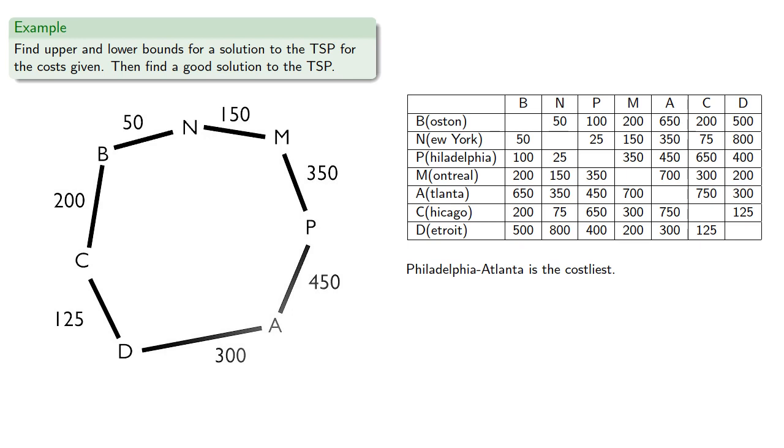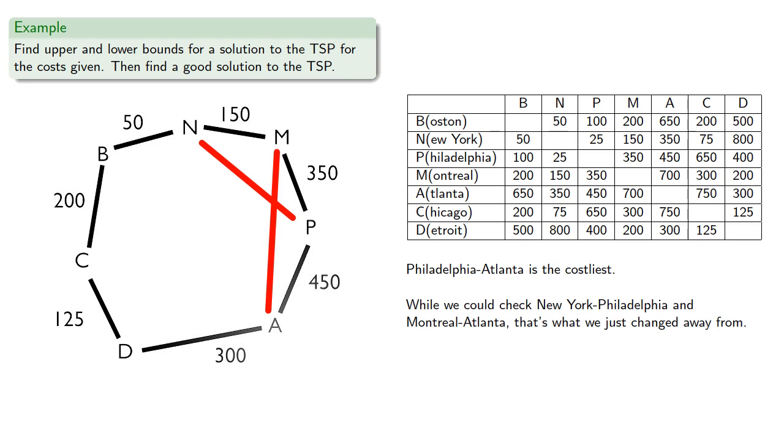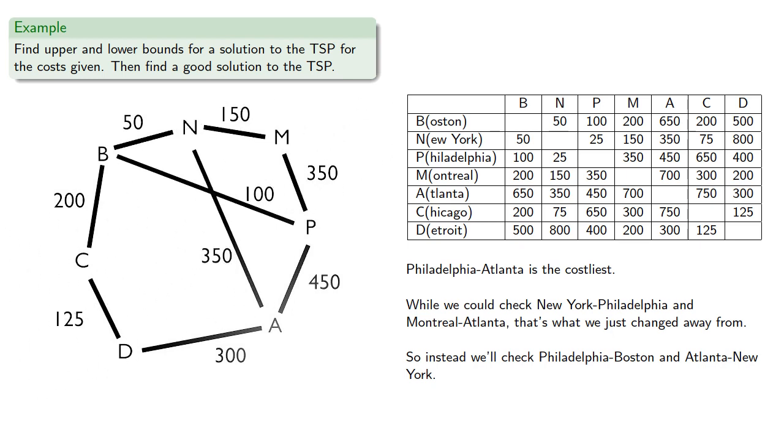Now Philadelphia-Atlanta is the costliest. While we could check New York-Philadelphia and Montreal-Atlanta, that's what we just changed away from. So instead we'll check Philadelphia-Boston and Atlanta-New York, which replaces 500 with 450, so we should replace and untwist.